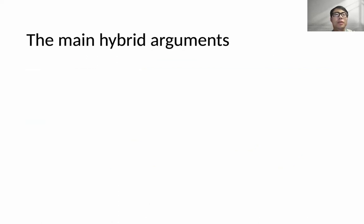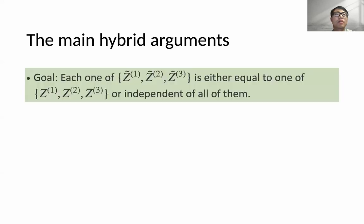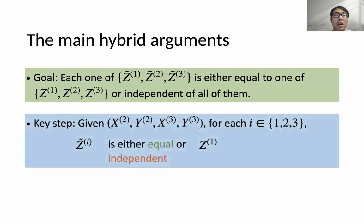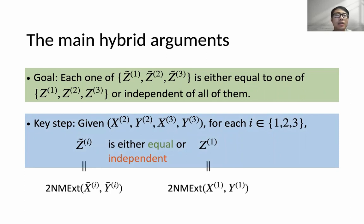Now I will give some intuition behind the proof of the main hybrid argument. The goal is to show that each Z_i-tilde is either equal to one of the Z_i or independent of all of them. A key step is to show the following: given X2, Y2, X3, Y3, for each i, Z_i-tilde is either equal to or independent of the original Z1. The proof of this key step contains most of our main techniques, so for the rest of the talk we will mainly focus on the ideas behind this proof. Recall that Z_i-tilde and Z1 are outputs from the two-source non-malleable extractor. The idea is to reduce the problem to the security of the underlying two-source non-malleable extractor.